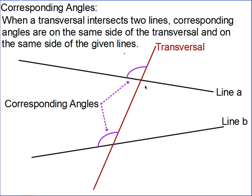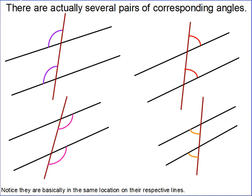If you look at this set of four angles, this is the upper-left angle, and it is in the same position as the one on the next line down the transversal. It's kind of like your left hand is in the same position as everybody else's left hand — those would be called corresponding parts. Here's a diagram showing all four sets of corresponding parts.